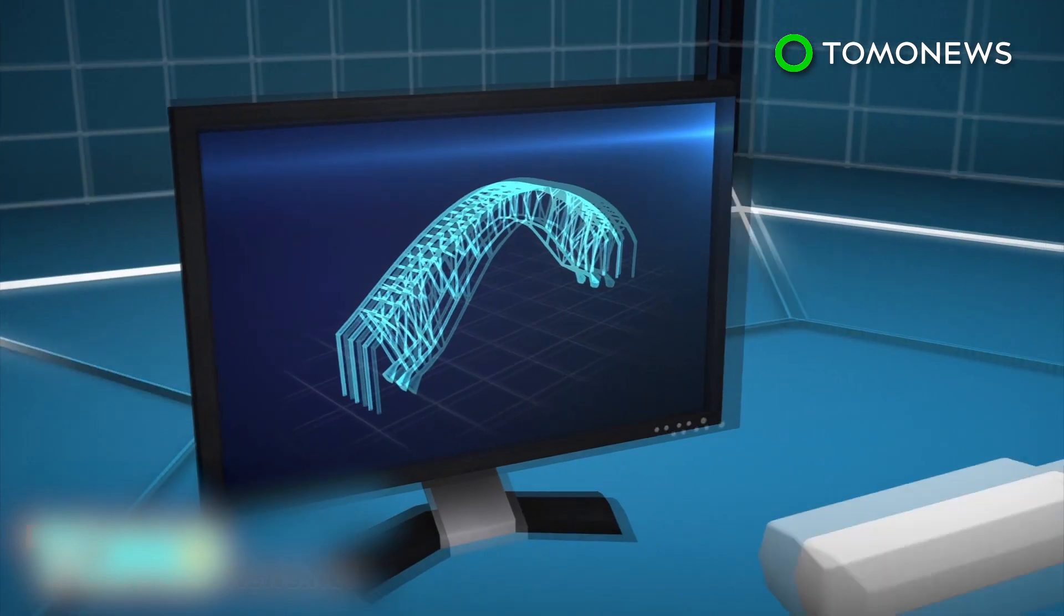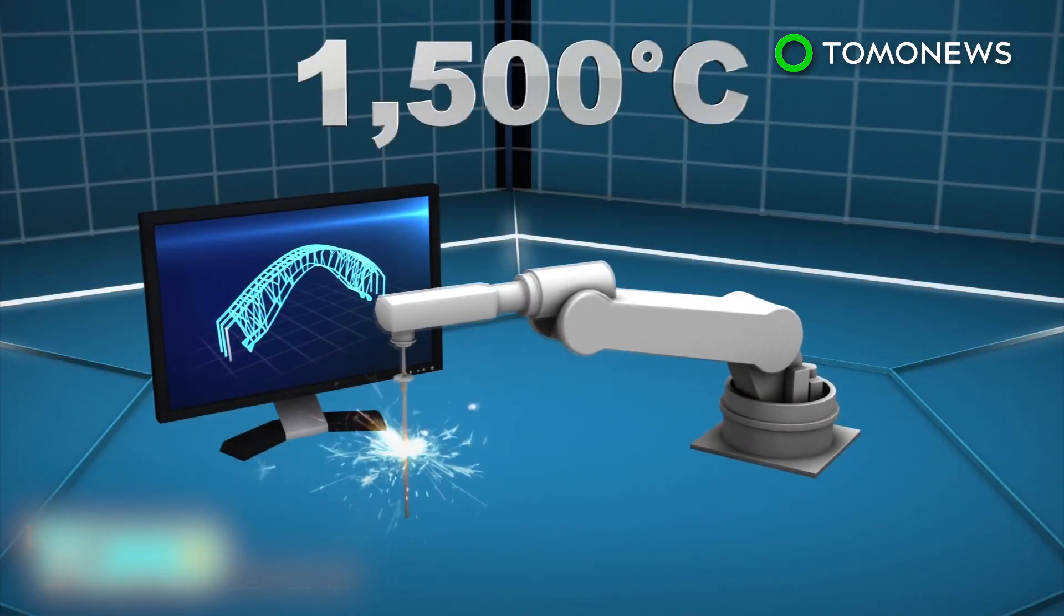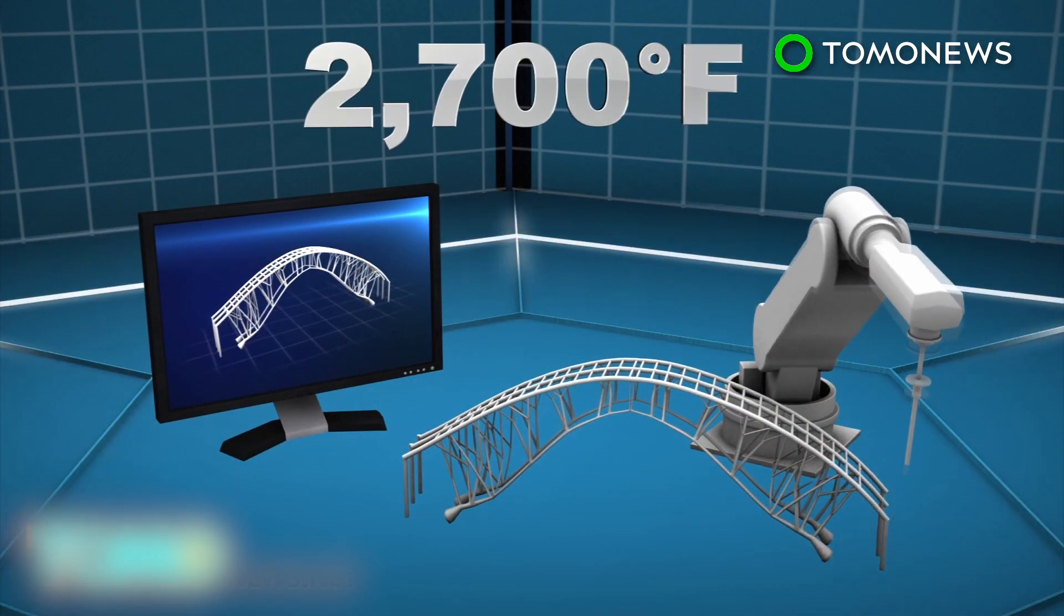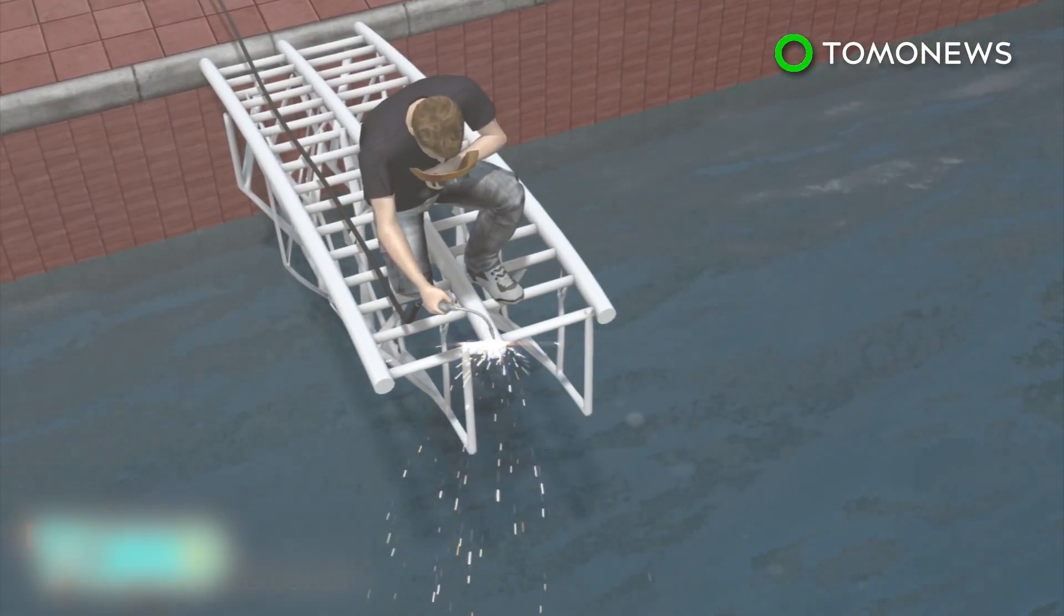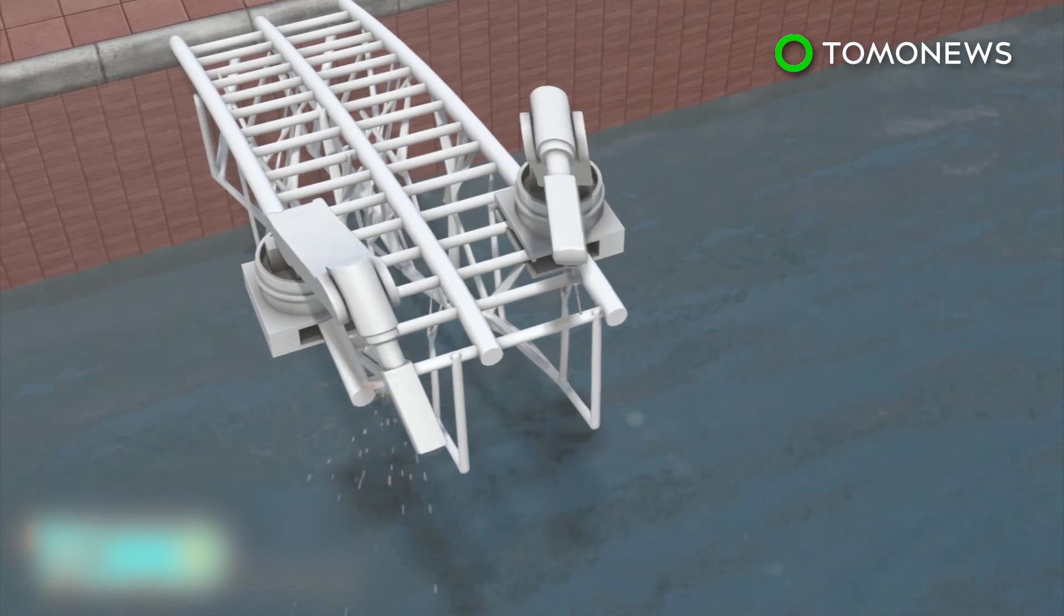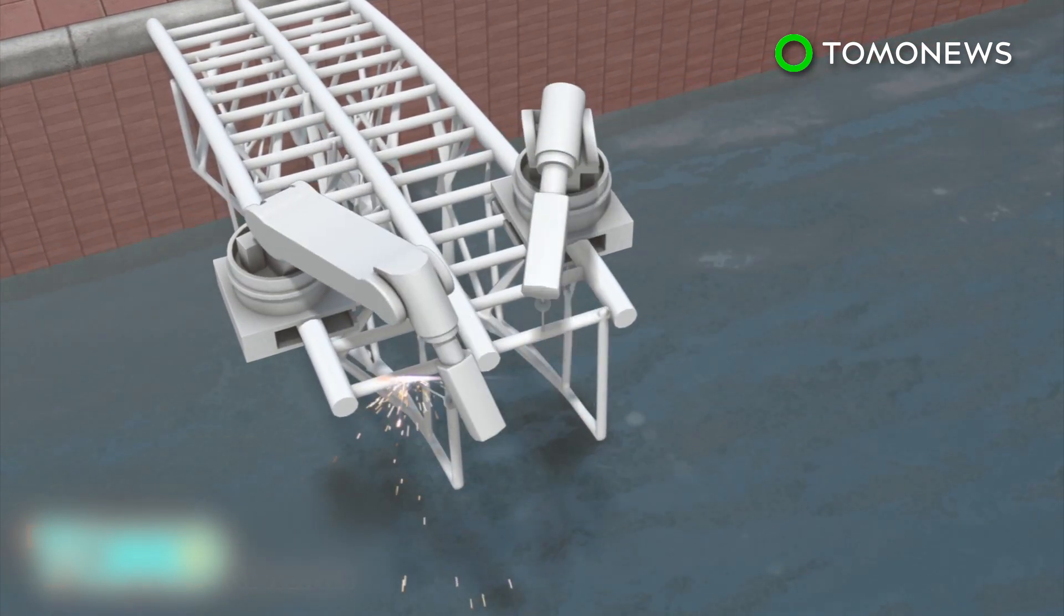A computer program plots designs while robotic arms heat metal to 1,500 degrees Celsius, around 2,700 degrees Fahrenheit, to weld structures drop by drop. This technique removes the need for scaffolding and people as the robotic arms are supported by the very structure they are printing.